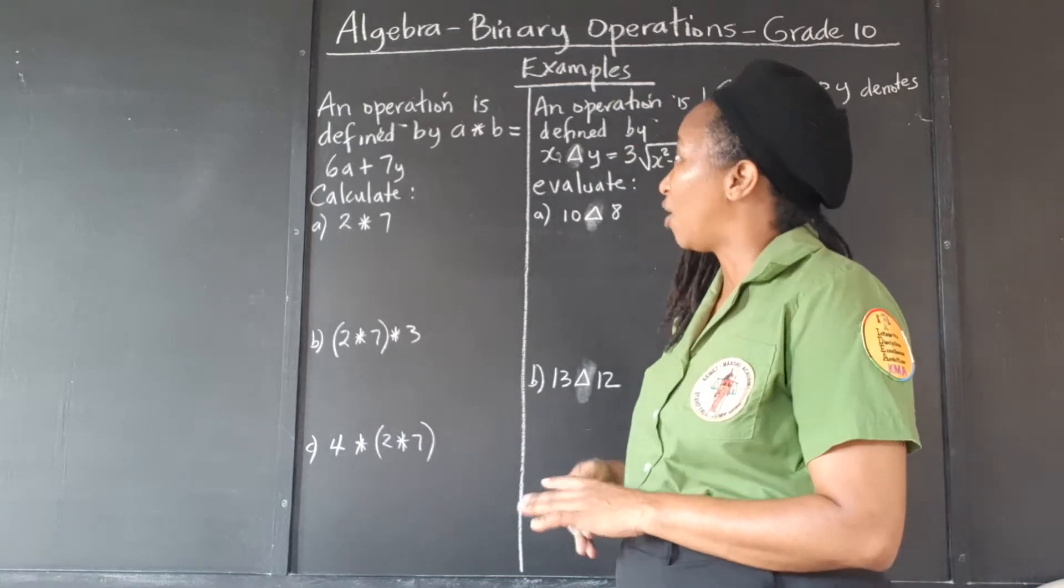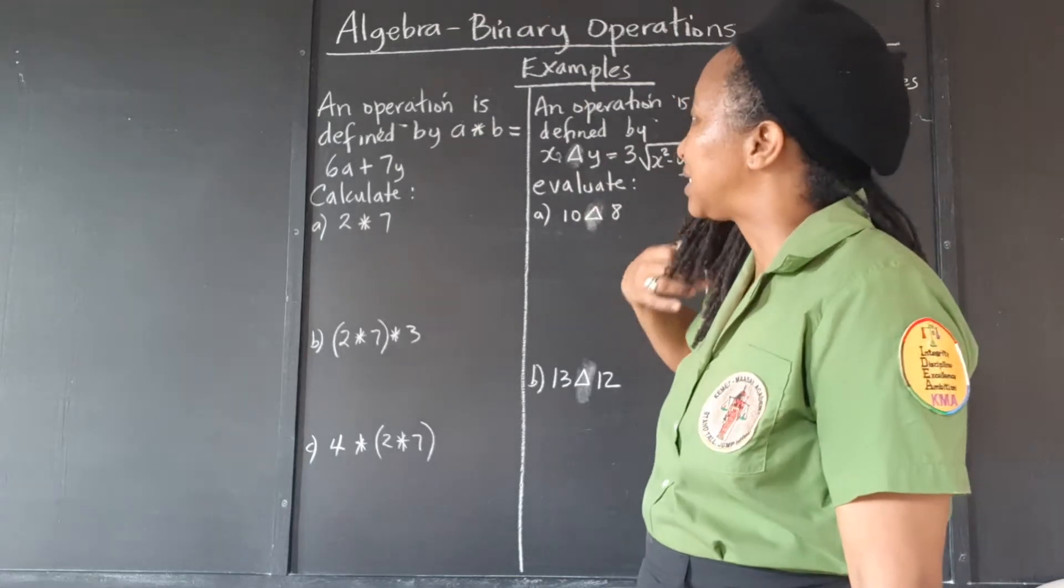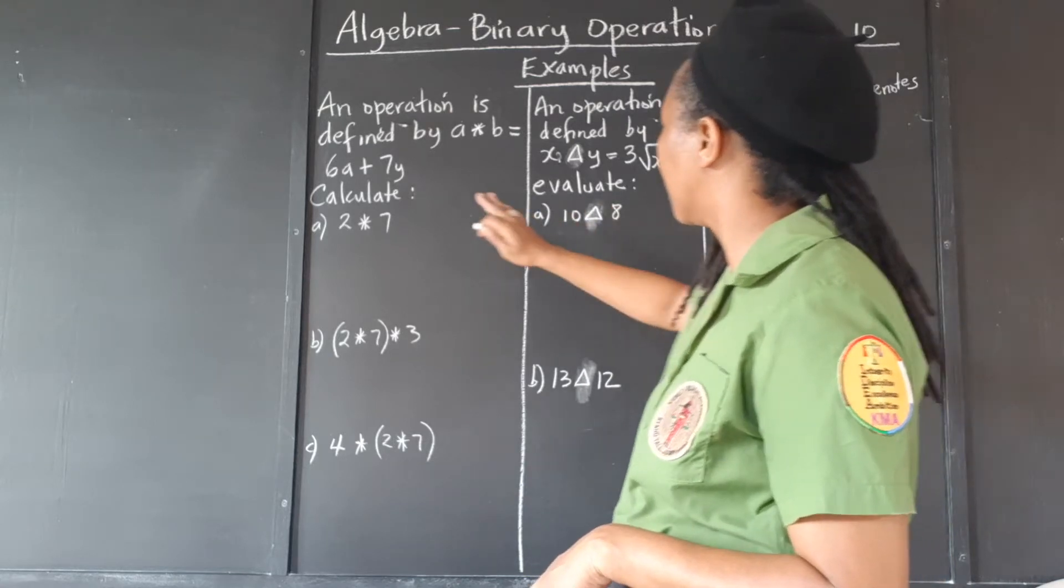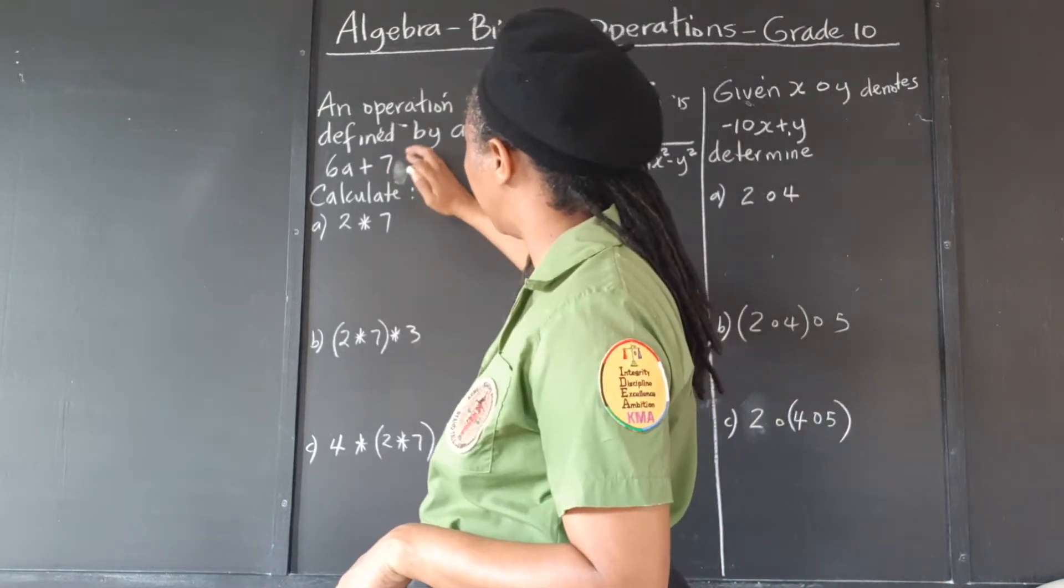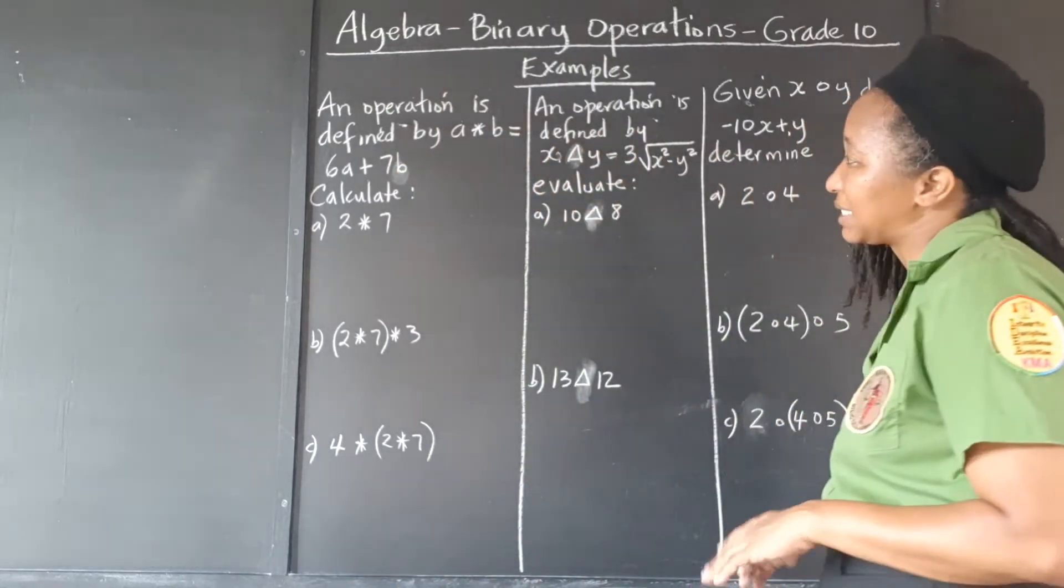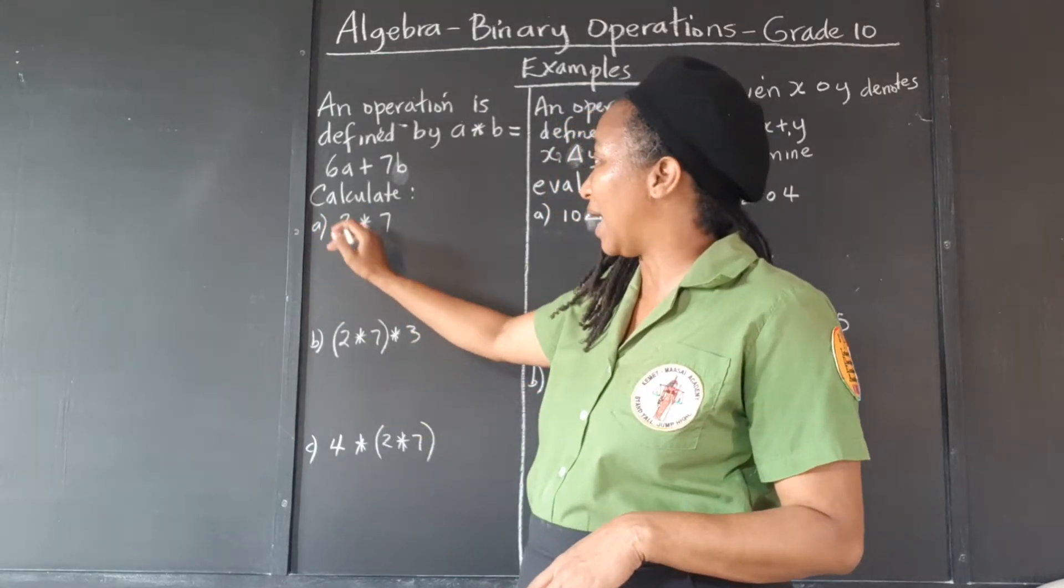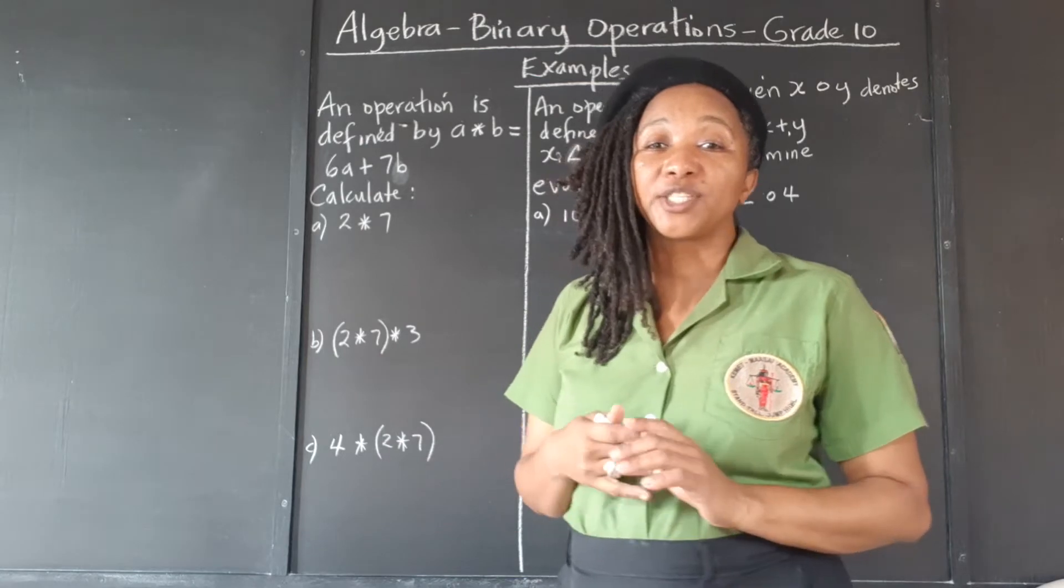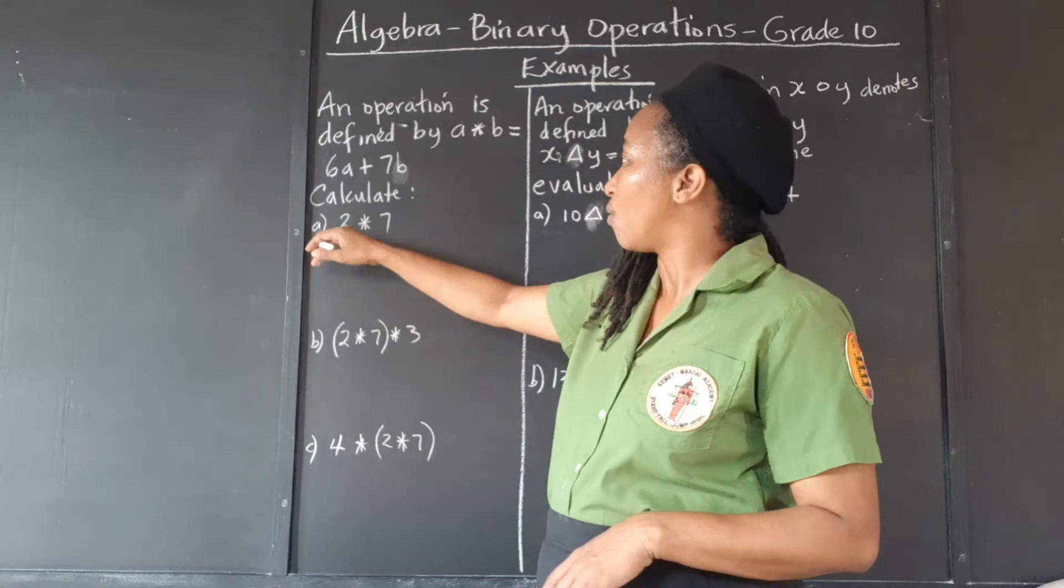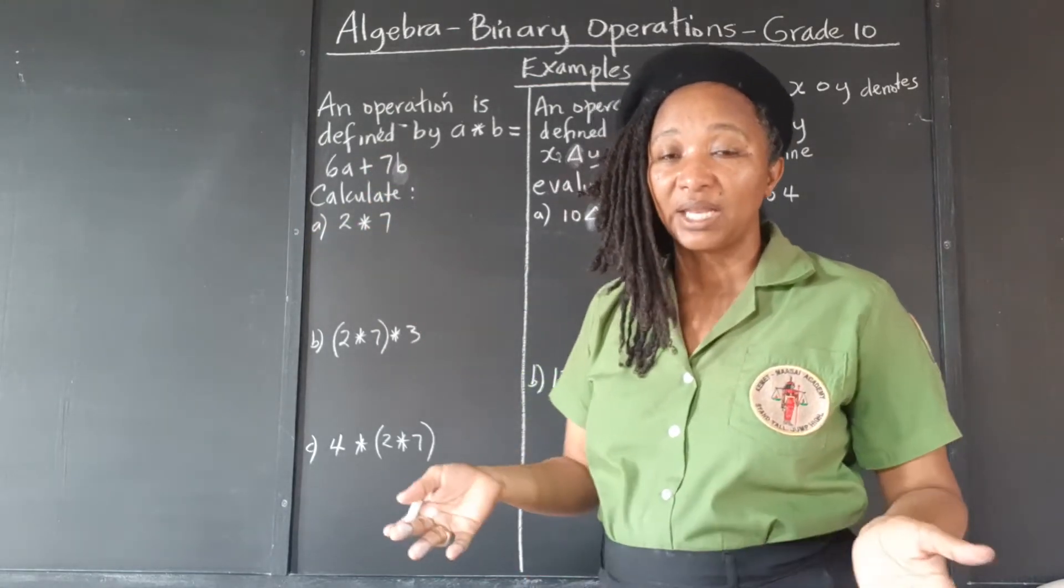So they're saying an operation is defined by a asterisk b equals 6a plus 7b. So what this means is we're going to substitute, because they said 2 asterisk 7, wherever you see a, you're going to substitute 2. Wherever you see b, you're going to substitute 7. That's all you're doing, right?